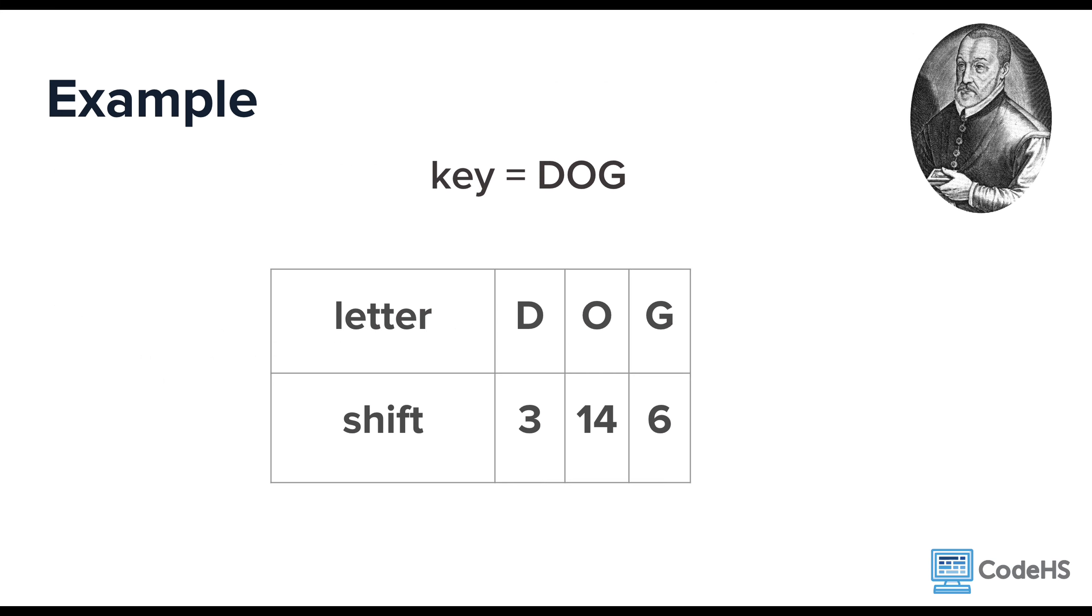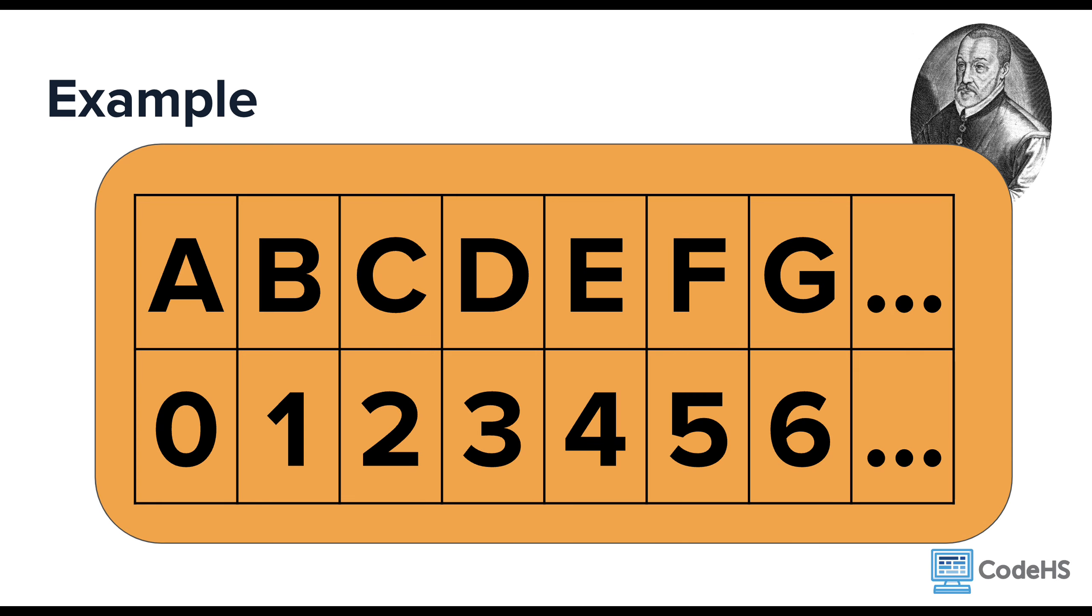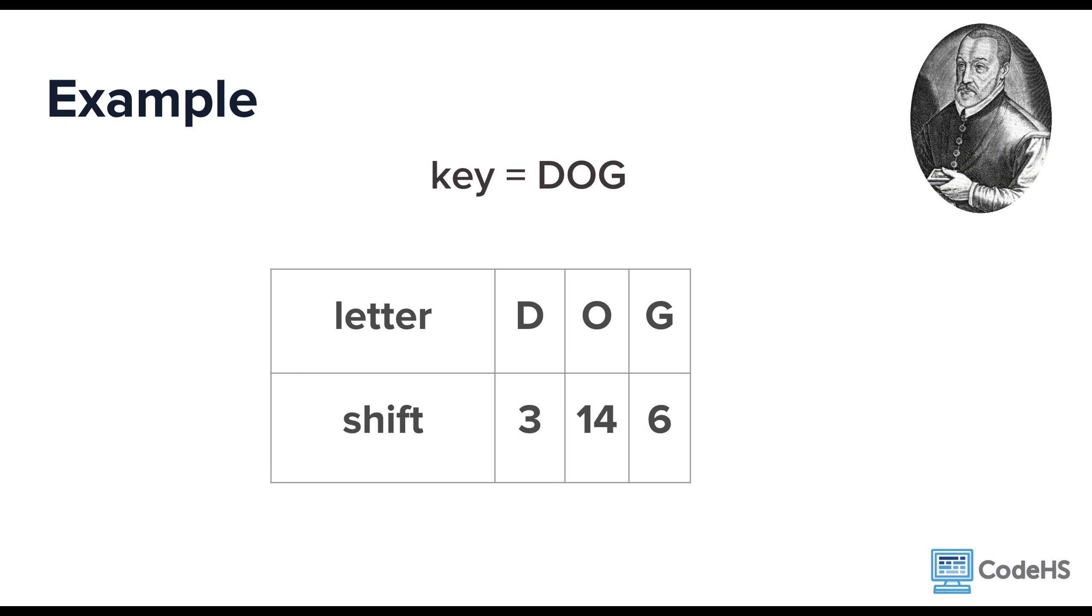Let's use a keyword of dog. Now, the letter A would be a shift of 0, B is a shift of 1, C is a shift of 2. So this makes D a shift of 3. The same process gives us a shift of 14 for O, and a shift of 6 for G.